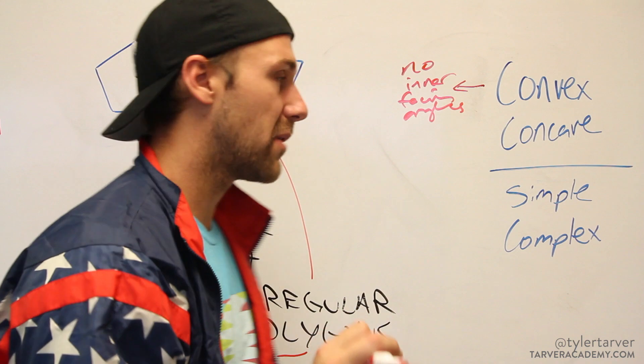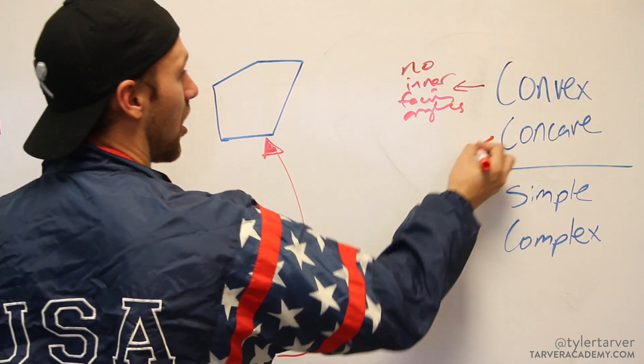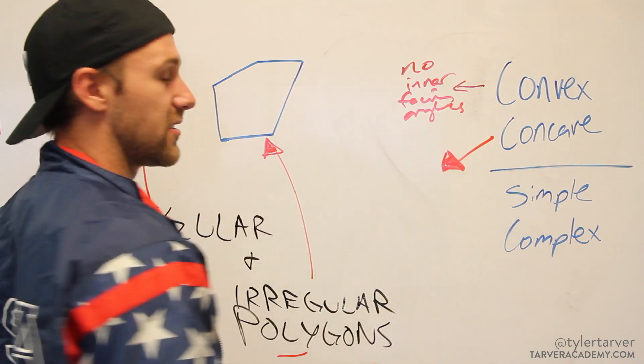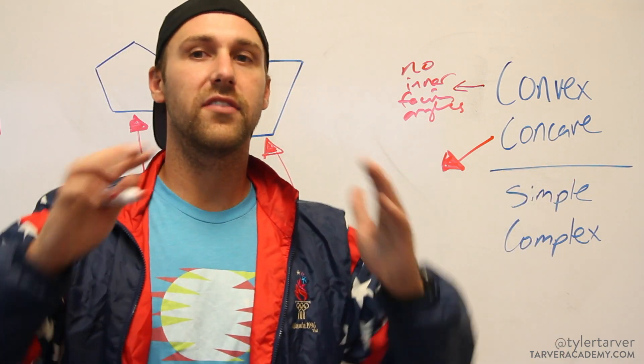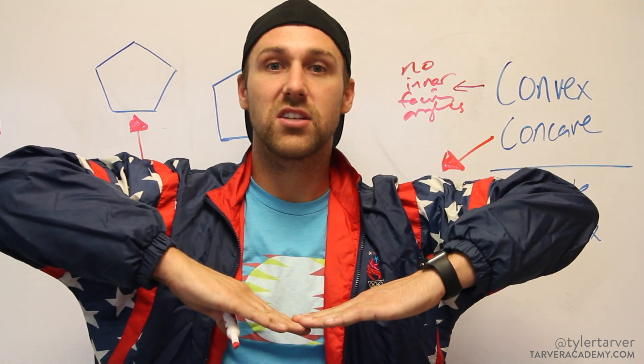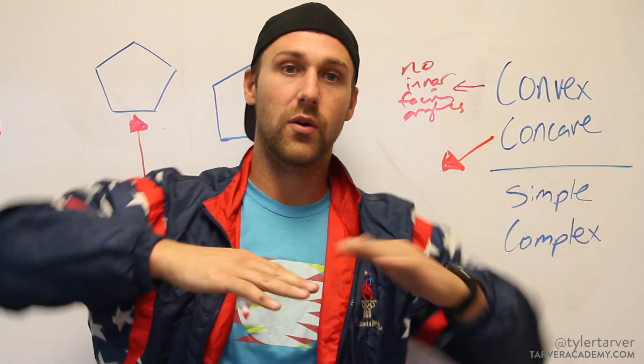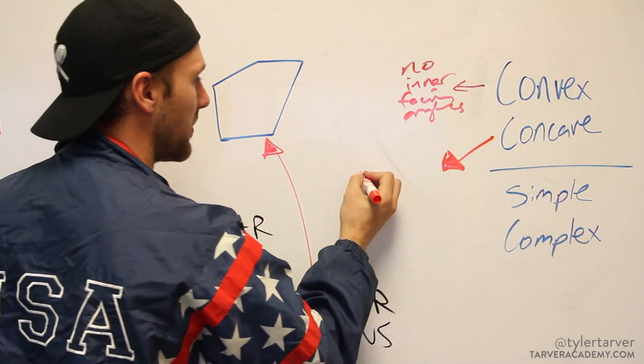Concave, however, does not fall into that category. Think of concave - if something's caved in, it means it's caved in, it means it's gone inward. So a concave polygon would be something like this.